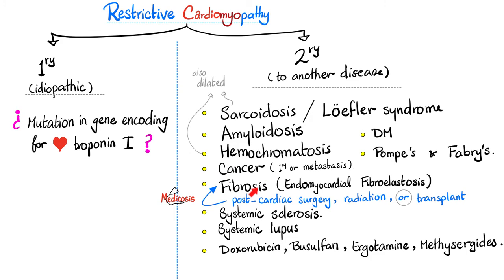Just as lung fibrosis restricts lung filling, cardiac fibrosis makes me unable to fill the heart. Less input and less cardiac output. If you said sarcoidosis, also say systemic sclerosis and systemic lupus. And medications: doxorubicin, busulfan, ergotamine, and the other ergot alkaloid — methysergide. When should we use ergotamine or methysergide? Comment below.